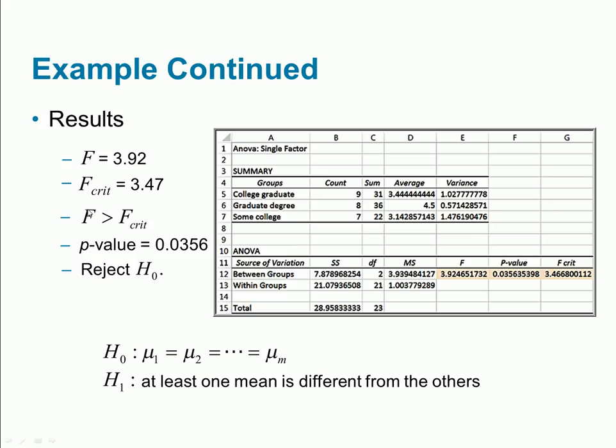In this case, F value is 3.92 and the critical value is 3.47. That tells me I need to reject the null hypothesis. I can also look at the p-value. The p-value is 0.0356, and that is less than the alpha value I set up. That also tells me I need to reject the null hypothesis.